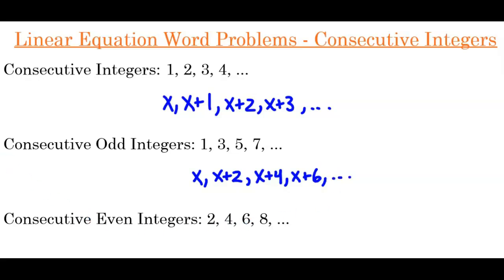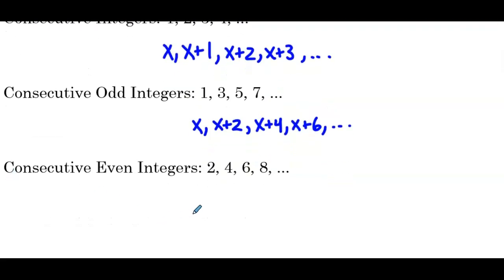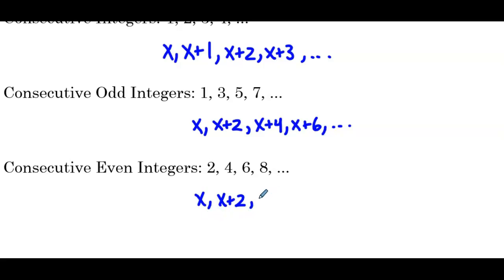Then we have consecutive even integers. The string 2, 4, 6, 8 is an example. We'll start by defining our first even integer with x. Then our next even integer is going to be x plus 2. To get from 2 to 4 we add 2; 4 to 6, we add 2; 6 to 8, we add 2. So if our first even integer is x, we have to add 2 to find our next even integer. Continuing that pattern, we have x plus 4, x plus 6, and so on.